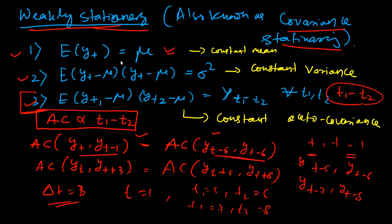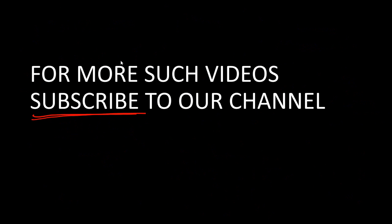That covers the stationarity condition, a very important concept in time series analysis. It has two parts: strictly stationary and weakly stationary. Strict stationarity is not a mandatory or realistic condition in real scenarios, whereas weak stationarity is commonly found in most time series data like stock prices and is studied very keenly in time series analysis.